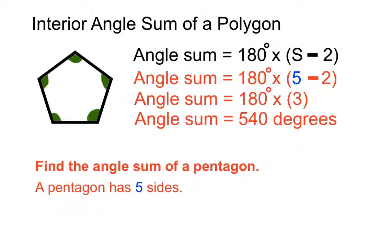So if we added up all those green angles that we have in our diagram, they would add up to a total of 540 degrees for a pentagon.